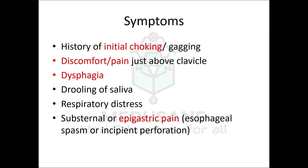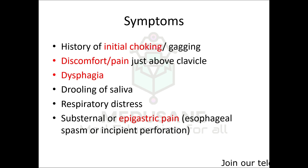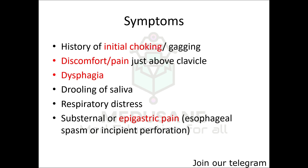The symptoms of a patient with a foreign body in the food passage include a history of initial choking, gagging, or discomfort and pain just above the clavicle. There will be dysphagia, which can be complete or partial. If dysphagia is complete, the patient will also complain of drooling of saliva. There can be respiratory distress because a large foreign body in the esophagus compresses the trachea anteriorly. The patient may also complain of substernal or epigastric pain, which can indicate esophageal spasm or incipient perforation.